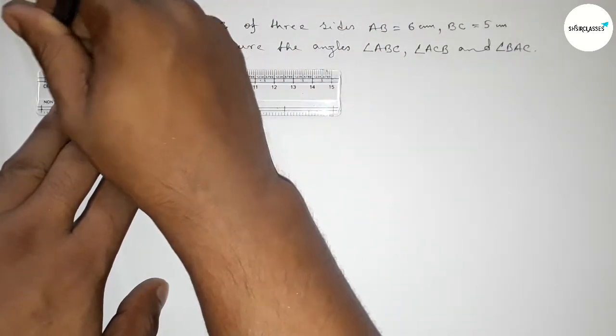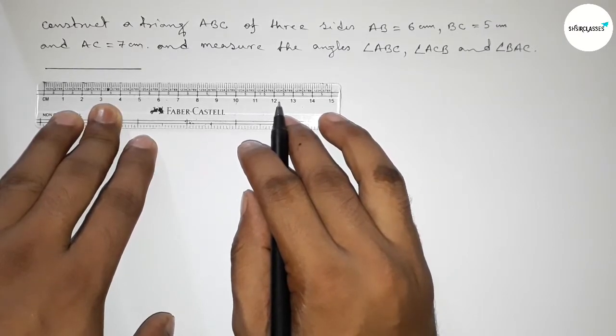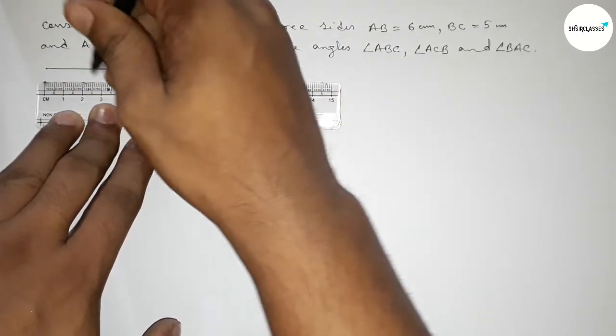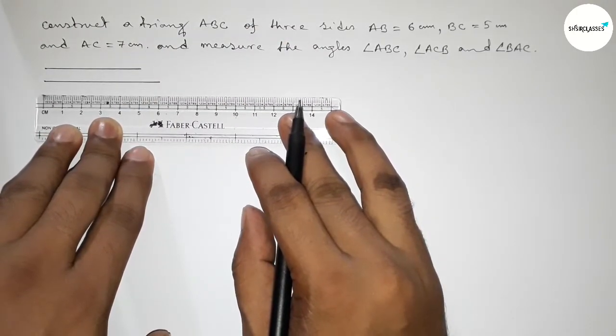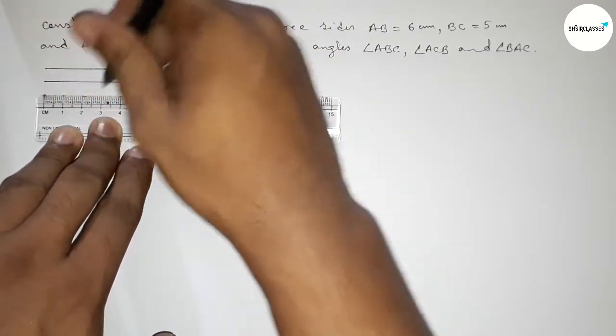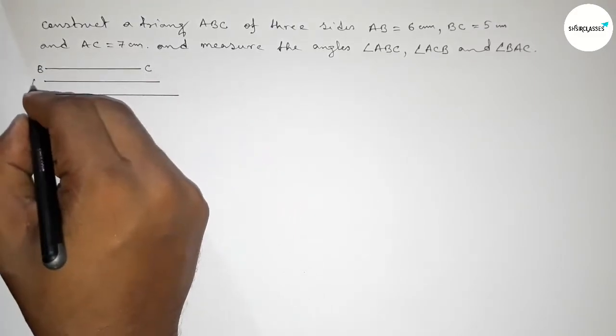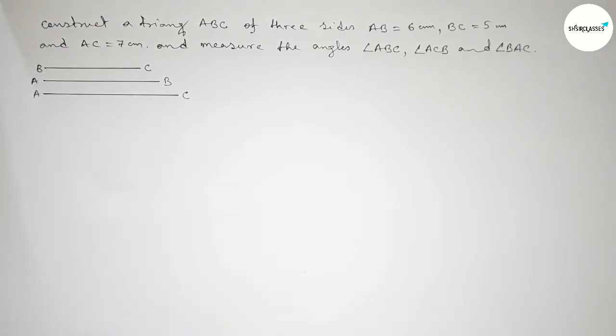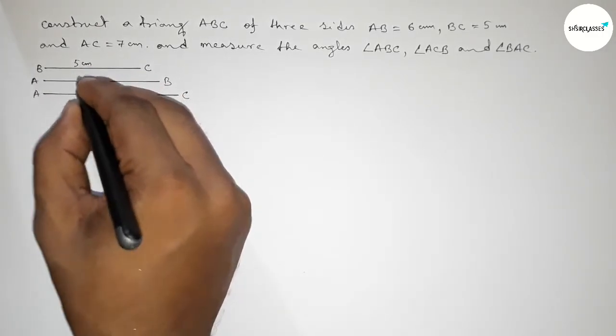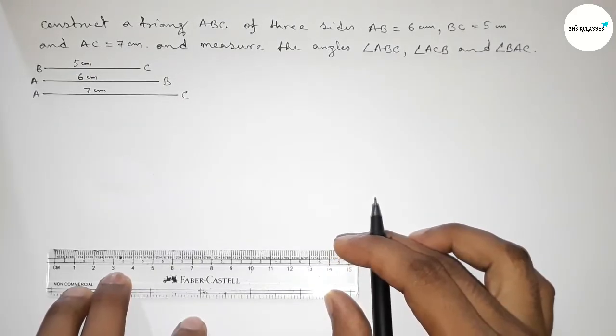Let's start the video. First of all, we have to draw the three given sides. First drawing a 5 centimeter line, then drawing a 6 centimeter line, then last drawing a 7 centimeter line. So this one is BC line, this one AB, and this one AC line. This is 5 centimeters, this one 6 centimeters, and this one 7 centimeters.